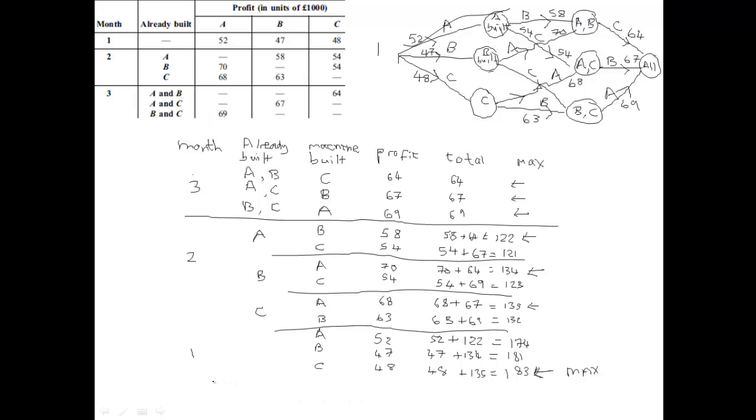We need to write out, to finish the question, and write it out properly in the units we're given, 183,000 pounds, and order for building the machines. Before we finish, you may have noticed an omission here in the network. It was this one here, where if B was built, C, we should have put 54 on there. So make sure it's complete, to make sure you get all of the marks, so we'll now add that 54.